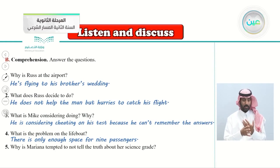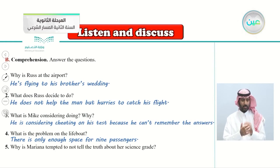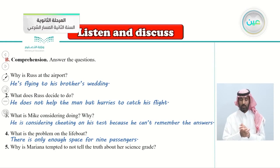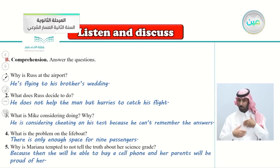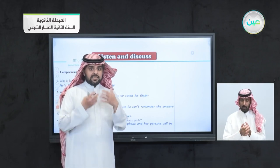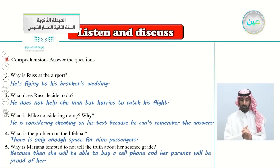Why is Mariana tempted to not tell the truth about her science grade? Because she will be able to get a cell phone and her parents will be proud of her — she saw that her parents were very happy with the grade and were considering getting her a phone. That's why she was tempted to keep quiet and not tell them the truth.